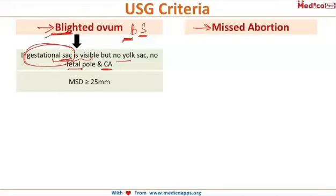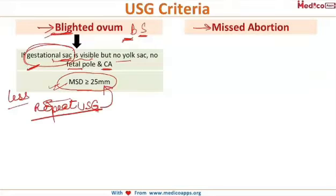To be labeled as a blighted ovum, there is one more criteria: the gestational sac should be more than or equal to 25mm — that is, the mean sac diameter should be more than or equal to 25mm. If the mean sac diameter is less than 25mm, then we repeat the ultrasound until the gestational sac size of 25mm is reached.